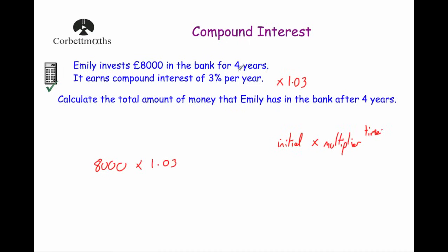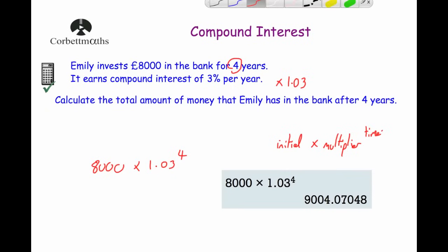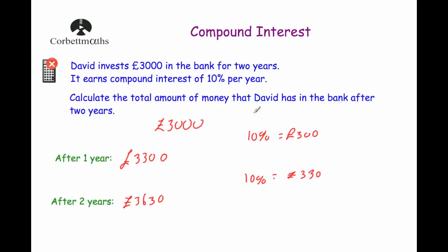If it were 5% interest the multiplier would be 1.05; for 20% interest it would be 1.20. The time is four years, so we do to the power of 4. We type 8,000 × 1.03⁴ into the calculator and get £9,004.07048. Rounded to two decimal places, that's £9,004.07. So Emily would have £9,004.07 in the bank — much quicker than working year by year.